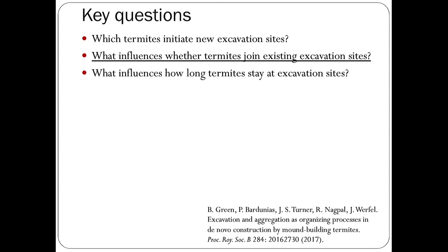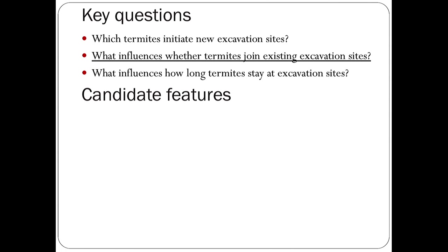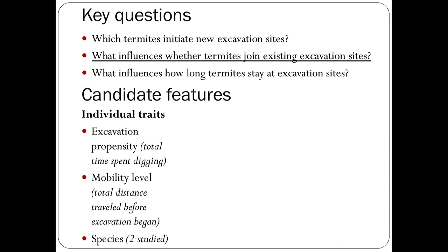We considered a bunch of different candidates that might influence that decision, falling broadly into three categories. The first was characteristics of the individual termite: excavation propensity — how much time it spent digging in total during the experiment, something like termite personality or mood — and mobility level, since some termites were more active in walking around than others. We also looked at the two different species thinking we might see differences.